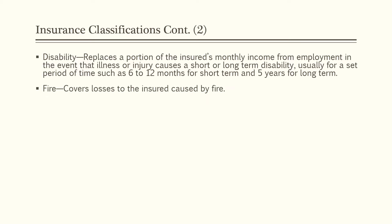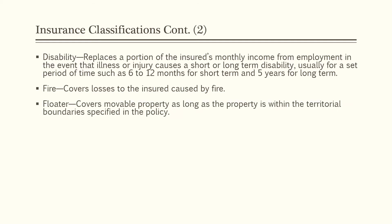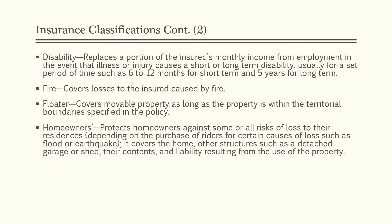Then there is fire insurance, which covers losses to the insured caused by fire. Floater insurance covers movable property as long as the property is within the territorial boundaries specified in the policy. A very important type of insurance is homeowners insurance. This protects homeowners against some or all risks of loss to their residences. Depending on the purchase of riders for certain causes of loss such as flood or earthquake, these perils generally aren't included in a standard homeowners policy.